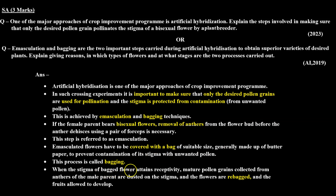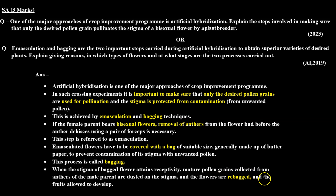When the stigma of the bagged flower attains receptivity, mature pollen grains collected from anthers of the male parent are dusted on the stigma, and the flowers are re-bagged and the fruits are allowed to develop. I hope this question is clear to you. Thank you.